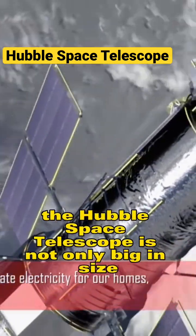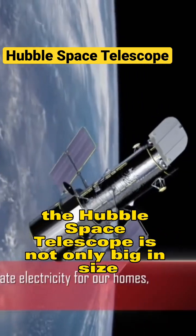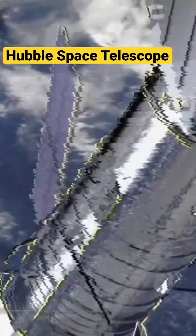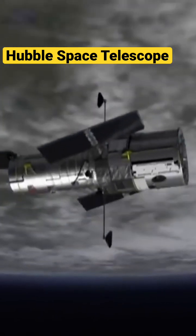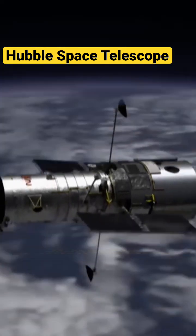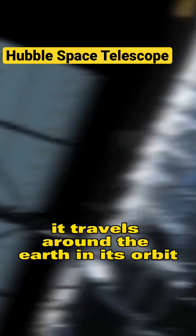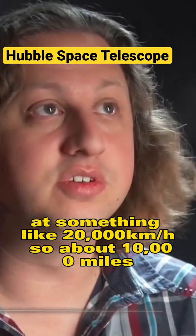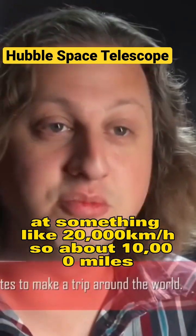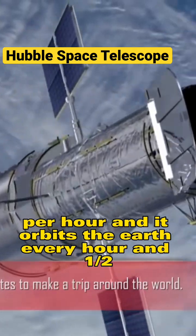The Hubble Space Telescope is not only big in size and low on energy, it's also fast. It travels around the Earth in its orbit at something like 20,000 kilometers per hour, so about 10,000 miles per hour, and it orbits the Earth every hour and a half.